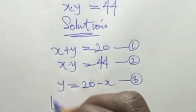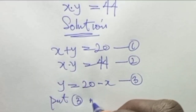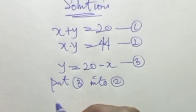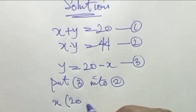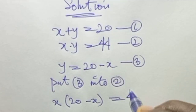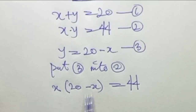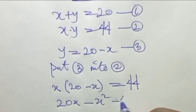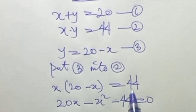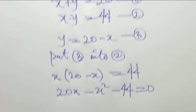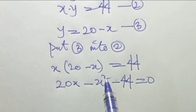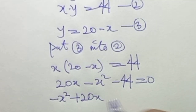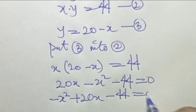We substitute equation 3 into equation 2. So equation 2 becomes s times (20 minus s) equals 44. Opening the bracket gives 20s minus s squared equals 44, and moving 44 across gives minus s squared plus 20s minus 44 equals 0.